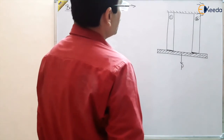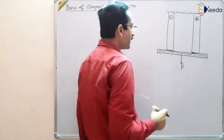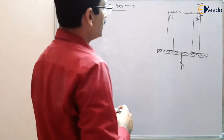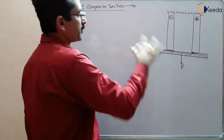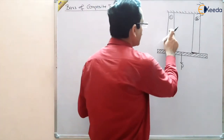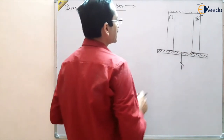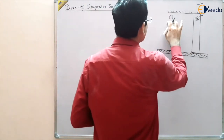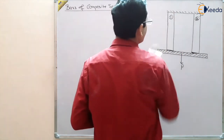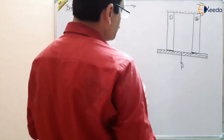Our aim is to find out the change in length of these bars, and also the stresses developed in bar 1 and bar 2. It is quite possible that bar 1 is made of a different material and bar 2 is made of a different material. So how do we evaluate the stresses and deflection in bars 1 and 2?